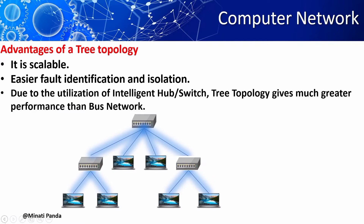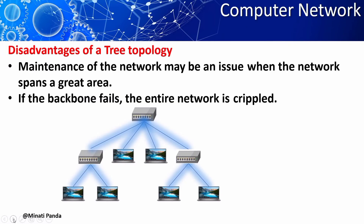Even if a single switch or hub has been damaged, it will still work properly. It can be managed and maintained easily. Node expansion is easy and fast — even if less space is available, we can easily add a new device to the hub or switch, and you can create more space through star topology.